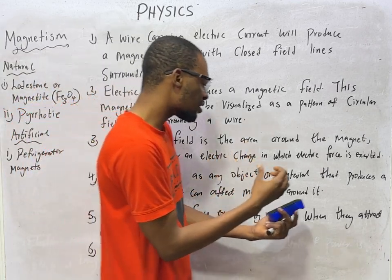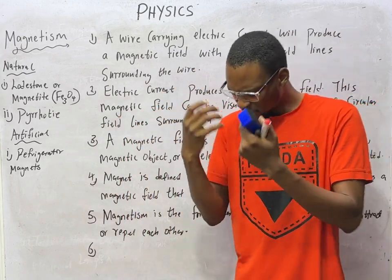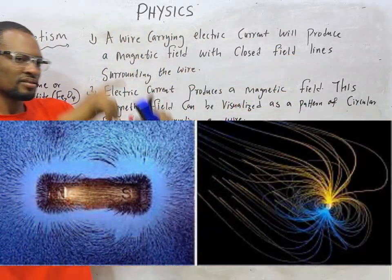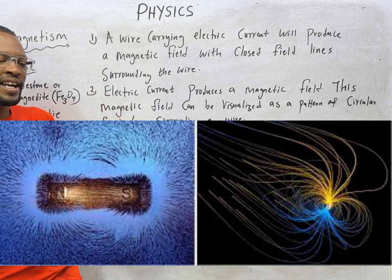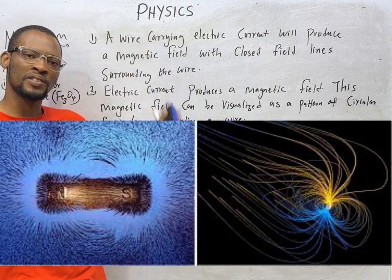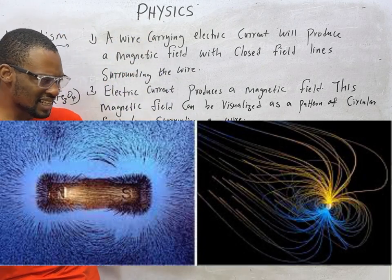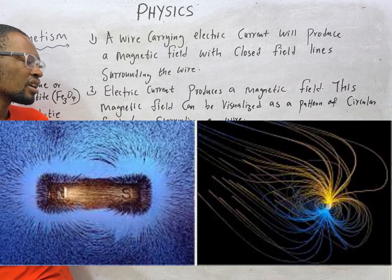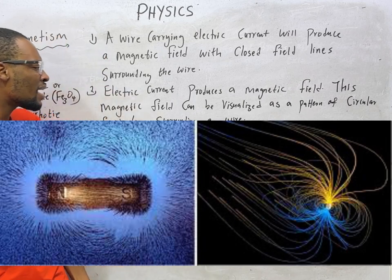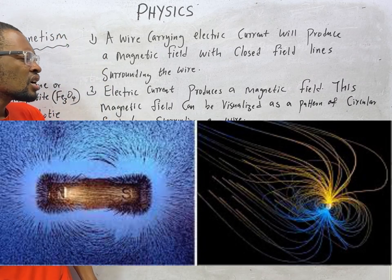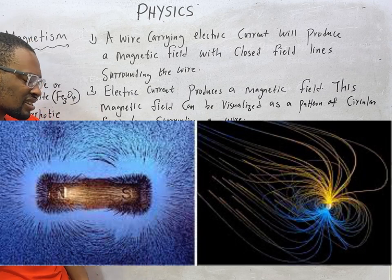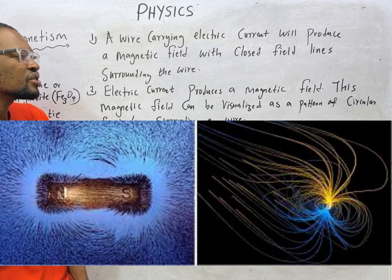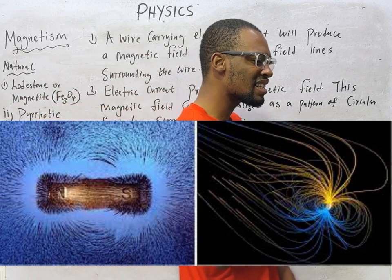This magnetic field can be visualized as a pattern of circular field lines surrounding the wire. You can think of this magnetic field as a pattern of circular lines around the wire — imagine that to be a magnetic field, a pattern of lines surrounding a wire. A magnetic field is the area around the magnets or magnetic objects or electric charge in which magnetic force is being exerted.